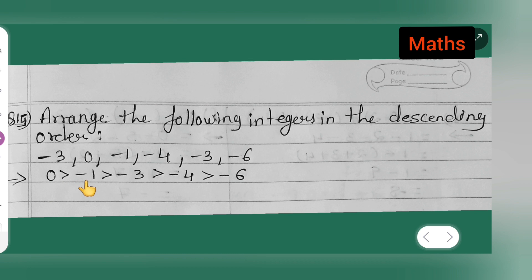First is 0 we have taken, then we have taken -1 which is greater than -3. Now this -3 is greater than -4.